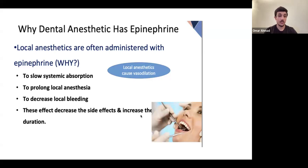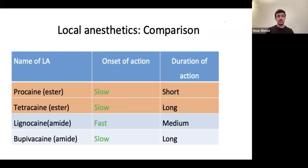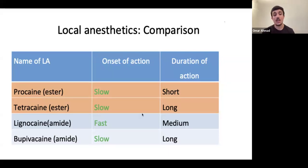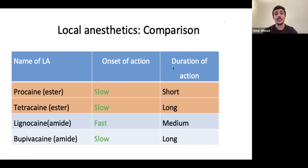Also note: local anesthetics themselves cause vasodilation, so epinephrine counteracts that by causing vasoconstriction. Regarding anesthetic comparison - this is low yield but came in a past midterm: lignocaine has the fastest onset of action, and bupivacaine has the longest duration of action.